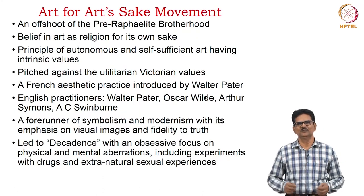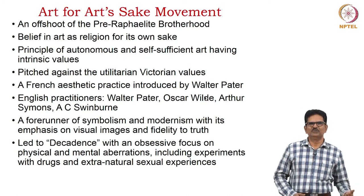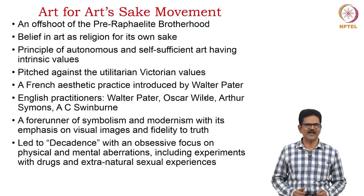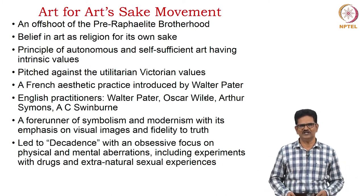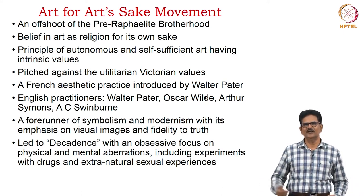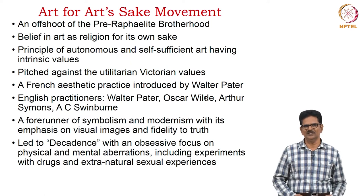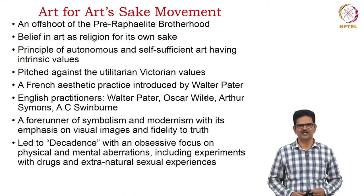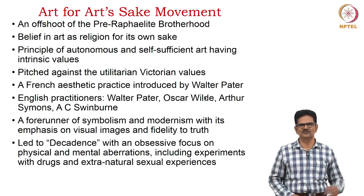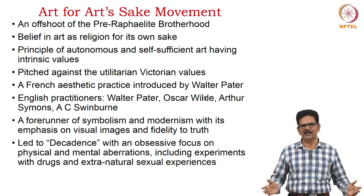Next, we pay attention to the Art for Art's Sake movement, which is an offshoot of the Pre-Raphaelite Brotherhood. They believed in art as religion for its own sake, with the principle of autonomous and self-sufficient art having intrinsic values. They pitched against the utilitarian values of the Victorian period. This was originally a French aesthetic practice, introduced into England by Walter Pater. English practitioners include Pater, Oscar Wilde, Arthur Symons and A.C. Swinburne. This movement is a forerunner of symbolism and modernism, with its emphasis on visual images and fidelity to truth, and it finally led to decadence with an obsessive focus on physical and mental aberrations.